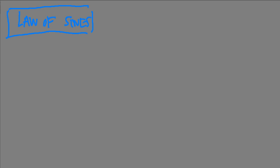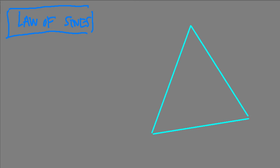So, if we have this triangle — we don't know what kind of triangle it is, it's definitely not a right triangle — basically, what the Law of Sines says is if I have this angle over here, let's call it angle 1, angle 2, and angle 3. We can show that the sine of angle 1 over side length A — let's call this A.